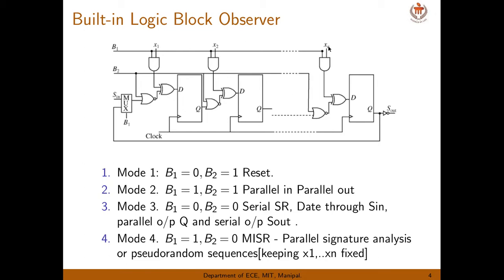There are four modes of operation. In Mode 1, B1 is 0 and B2 is 1. With B1 equal to 0, all AND gate outputs are 0. Since B2 is 1, the NOR gate output is 0 regardless of xi. So all XOR gate inputs are effectively 0, meaning each D flip-flop input receives 0. This mode is called reset — all flip-flops will be reset.